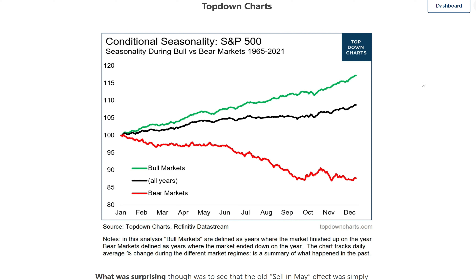I got curious, and the answer is kind of there on the screen. Here was my question: does seasonality look different in different market regimes? It's probably a question worth asking, given that we're basically in the middle of a bear market as I speak.